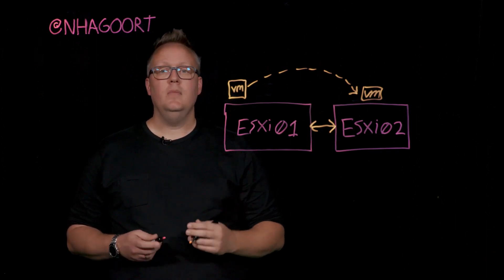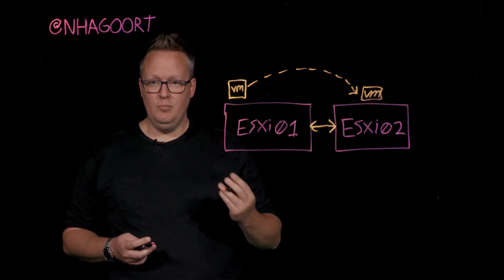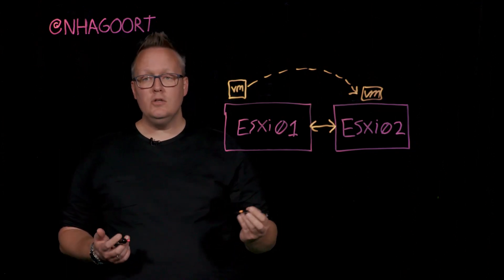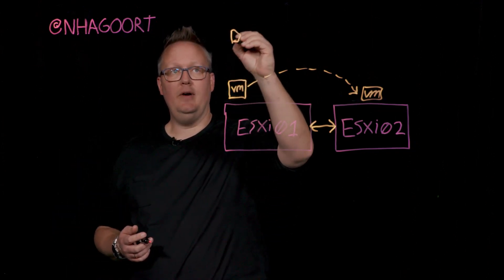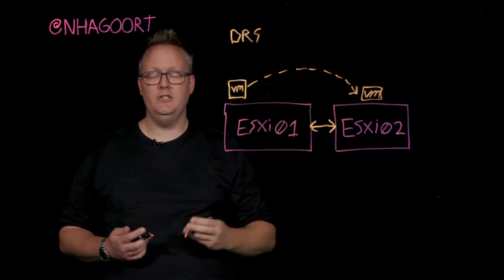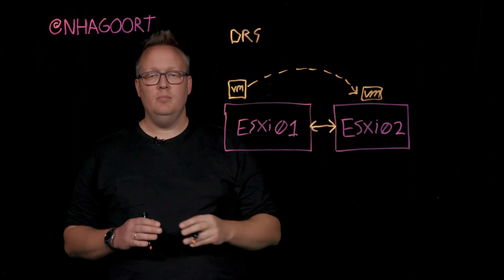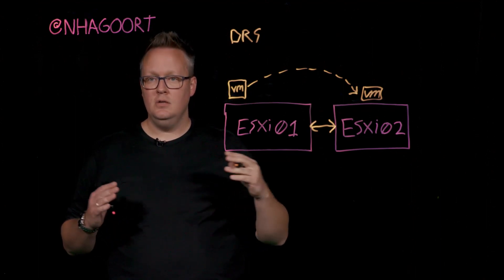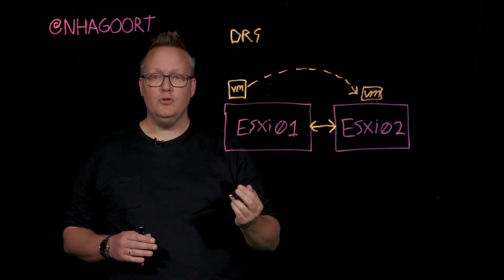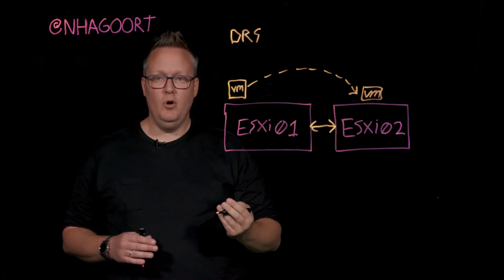Once this is set up, we can now initiate a vMotion operation from the vCenter server UI. We can also leverage tools like DRS, our distributed resource scheduling feature. DRS balances workloads across ESXi hosts within a cluster. Now, DRS is able to automatically initiate vMotion operations.